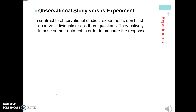The major difference between observational studies and experiments: with observational studies, you're not imposing any sort of treatment. The people have made the choices they've made — they've run the miles they've done, they've looked at the internet for five hours a day — you're not telling them to do something. They've already done it, and you're just looking at the results. You are not choosing to impose any sort of treatment on them. Whereas with experiments, they don't just observe individuals or ask them questions — they actively impose some sort of treatment in order to measure their response.